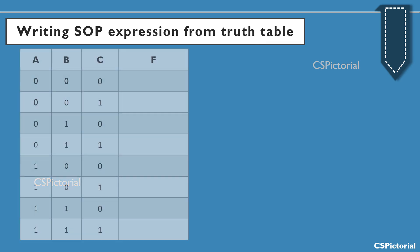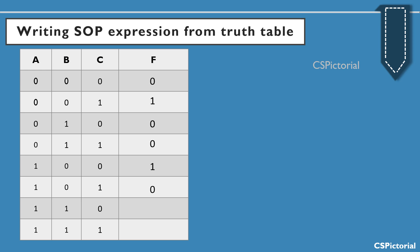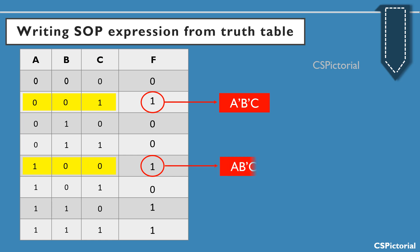Let us now try to write an SOP expression for a given truth table with output F. Pick off the truth table entries for which the output value is 1 and write the corresponding min term. Here A is 0, B is 0, and C is 1, so the min term is Ā·B̄·C. Similarly, the next min term is written as A·B̄·C̄.